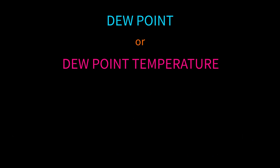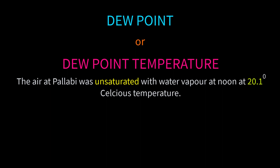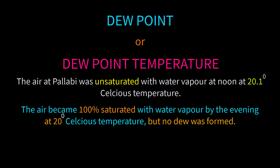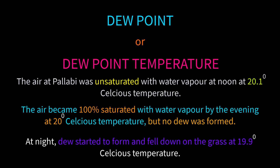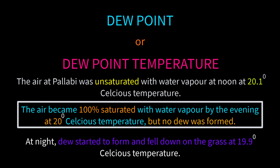For example: one day the air at Pallavi was unsaturated at noon at 20.1°C. By evening at 20°C, the air became 100% saturated with water vapor but no dew was formed. Then at night, dew started to form and fell on the grass at 19.9°C. Since just before dew formation the air became 100% saturated at 20°C with no dew formed, 20°C is the dew point temperature.